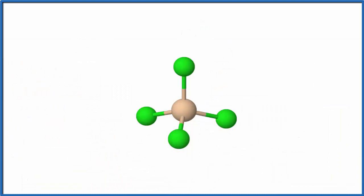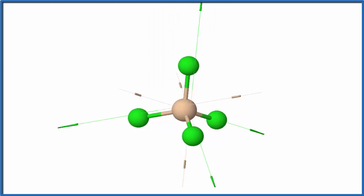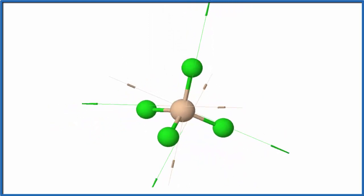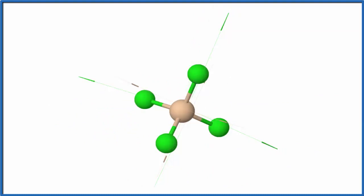So here's our SiCl4 molecule. The Si is in the center, the green are the chlorines. If we look at the dipole for each one of these bonds in this tetrahedral structure, we can see they all point away from each other. They're all pointing in opposite directions, following the arrow there. That means the bonds are polar, but overall, these are going to cancel out.